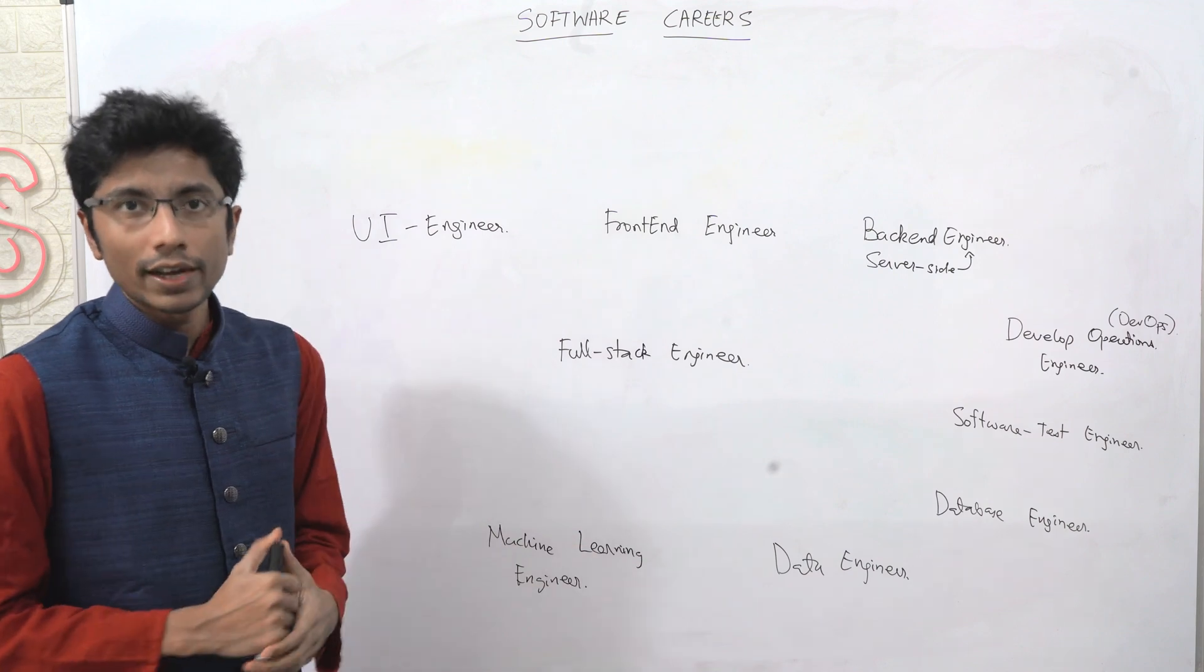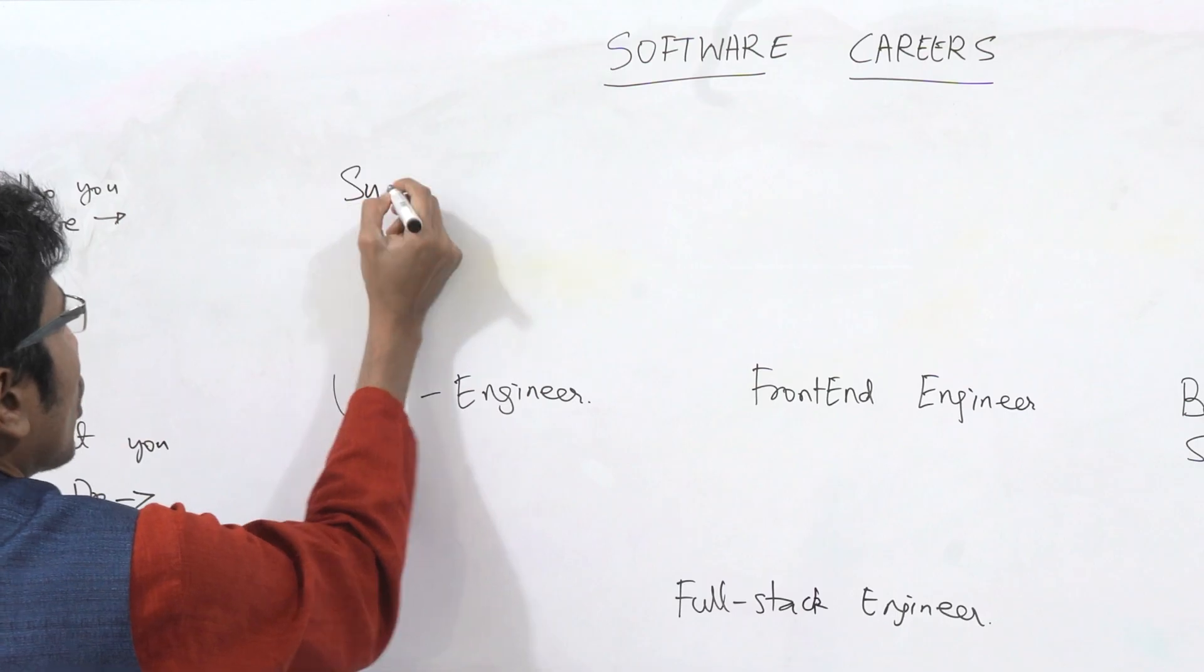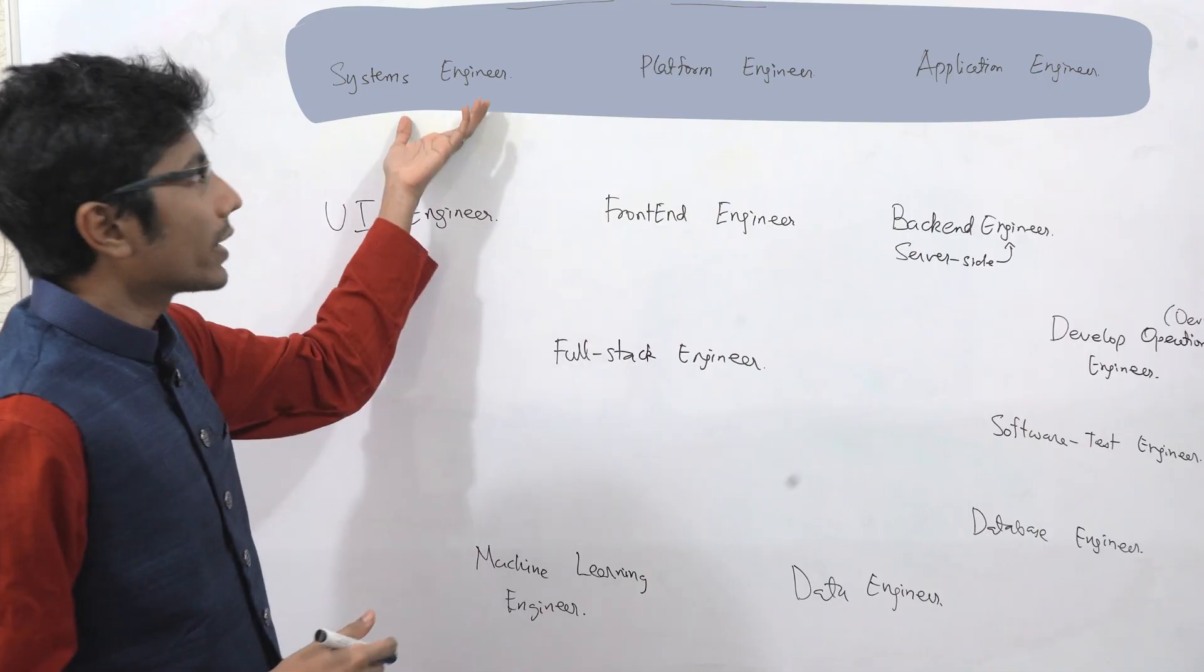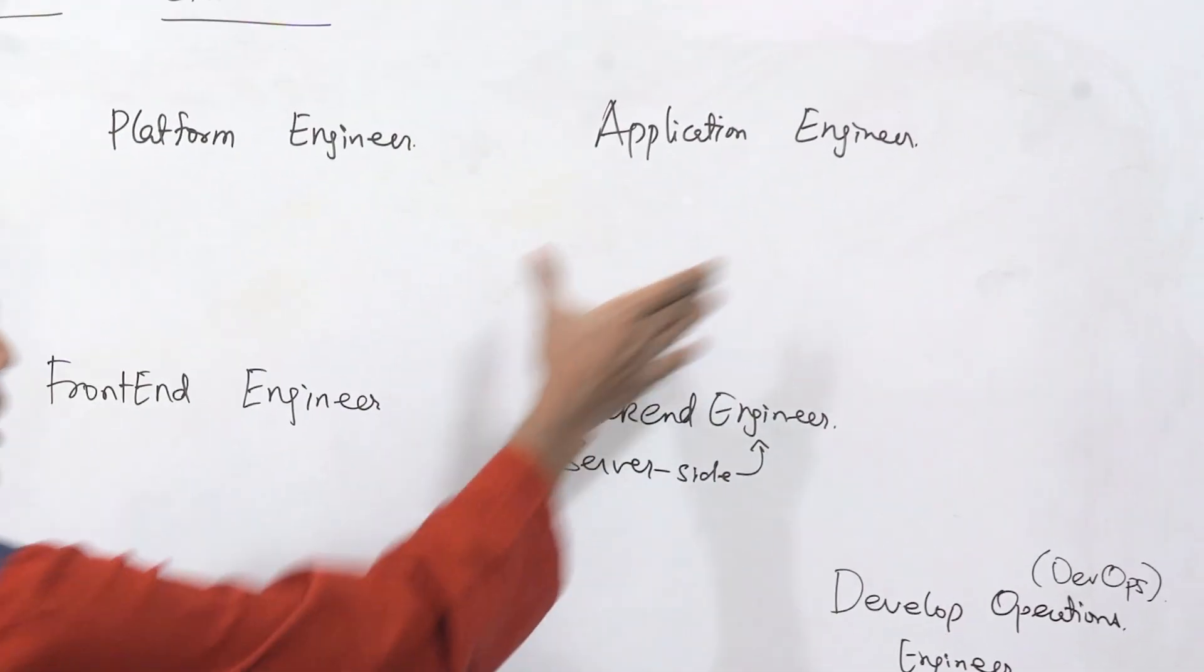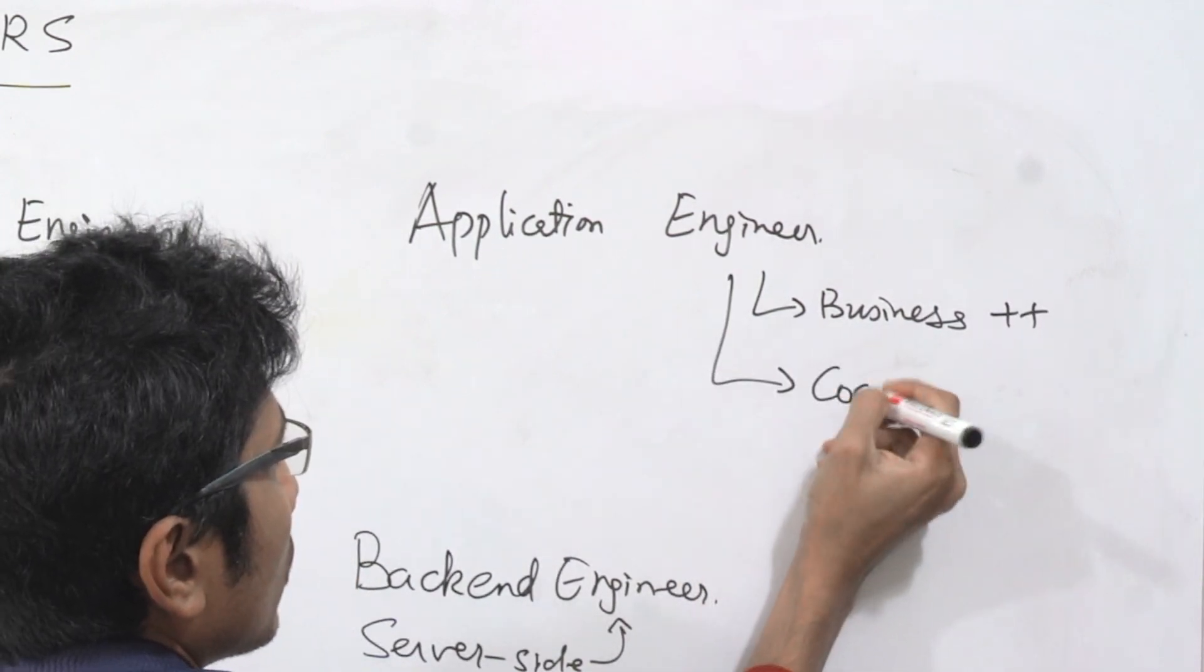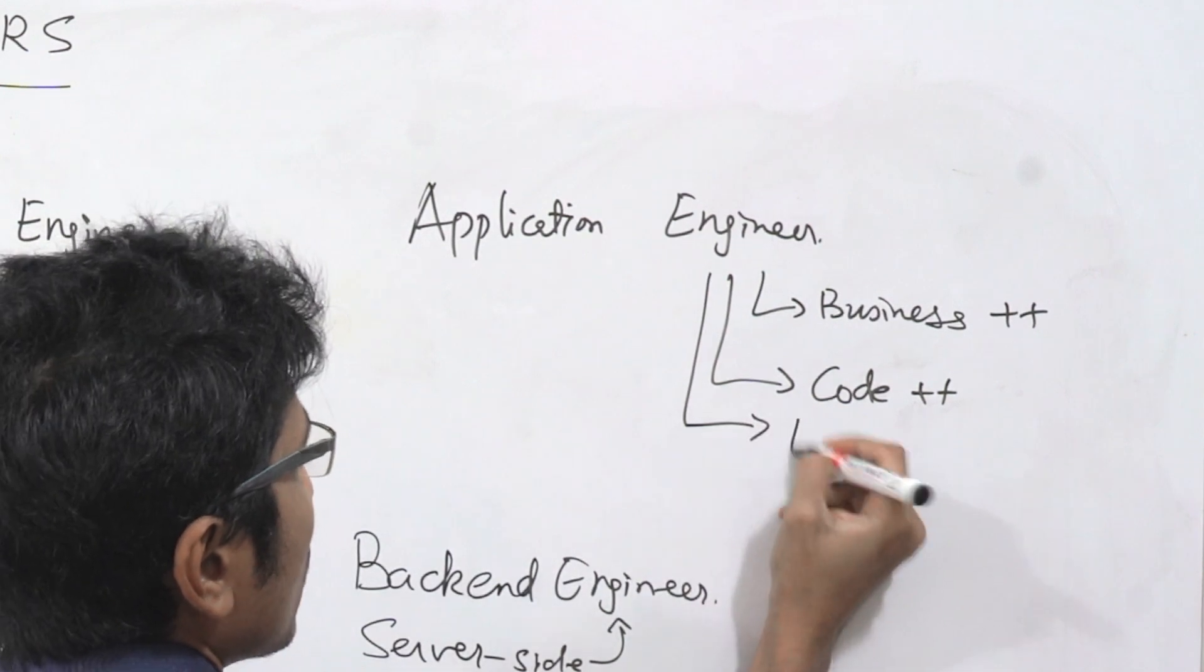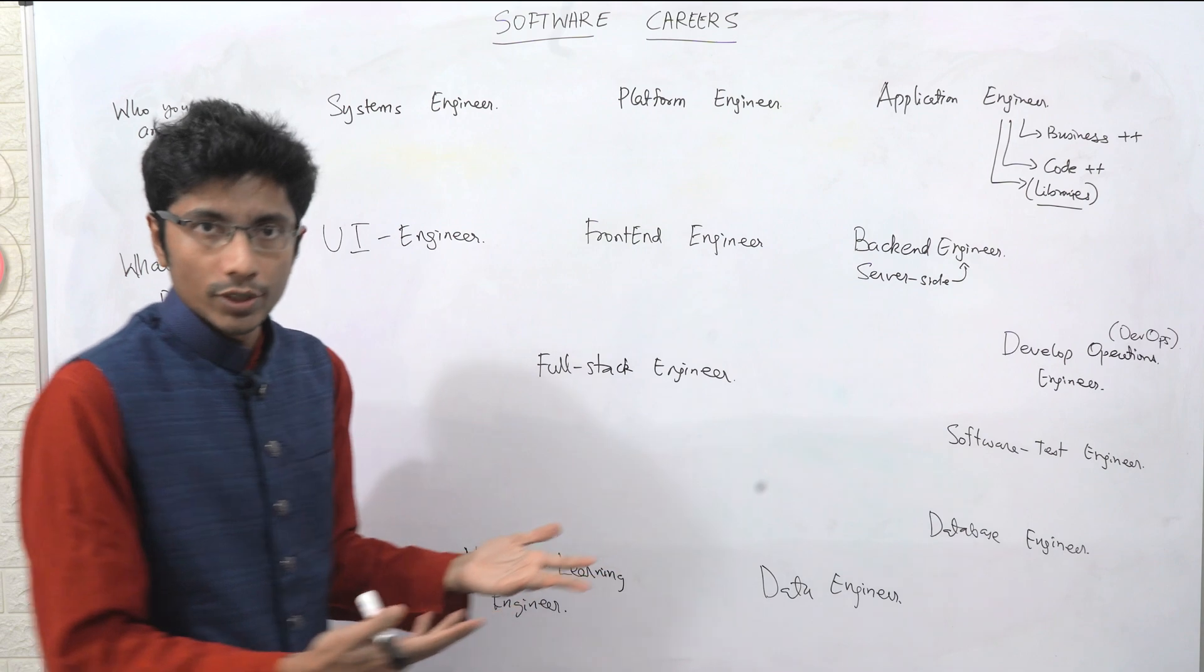But there's also who you are: systems engineer, platform engineer, and the application engineer. Who you are is more like what you do in relation to the business, so application engineers are folks who are more on the business side of things. They write code for the business side and they use libraries to write this code. An application engineer is very close to the customer.